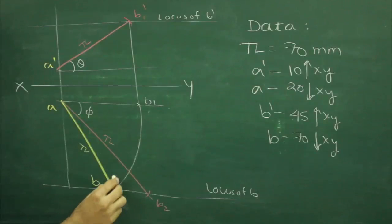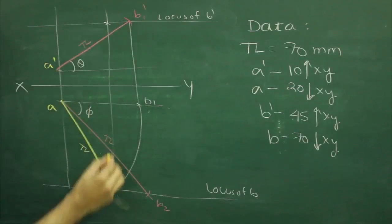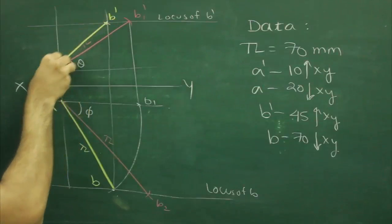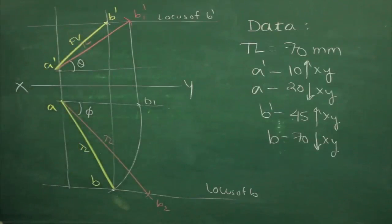Then from B, we will draw straight line up. Wherever it will cut with locus of B dash, that would be B dash, and join A to B dash. That would be your front view.